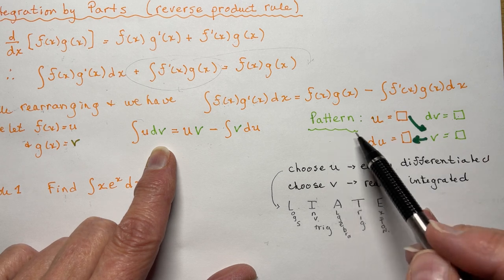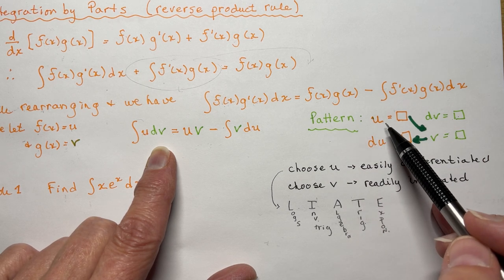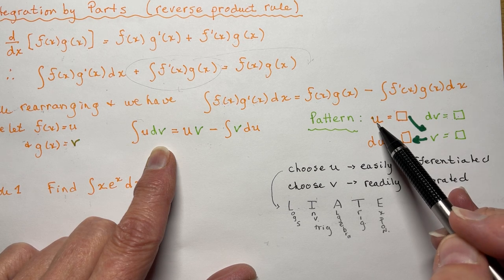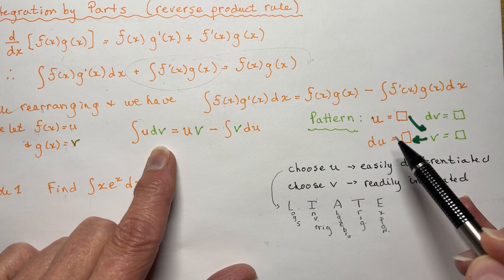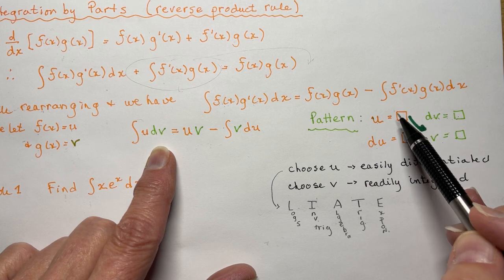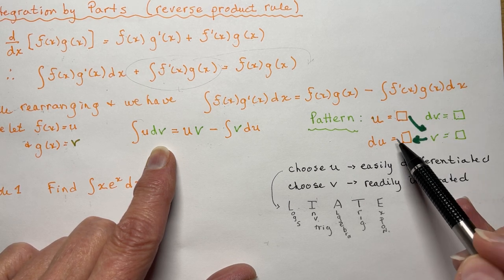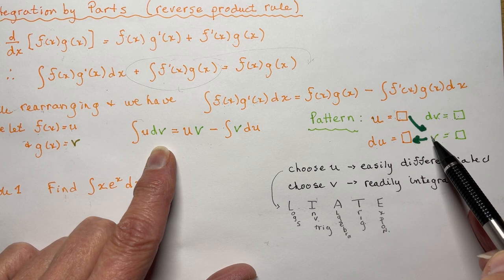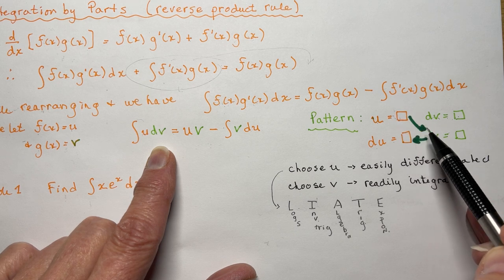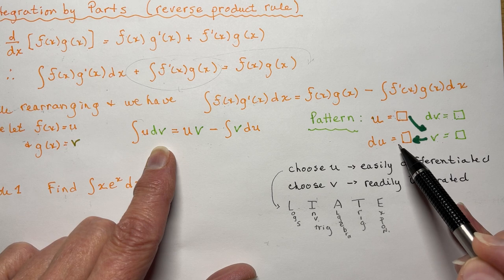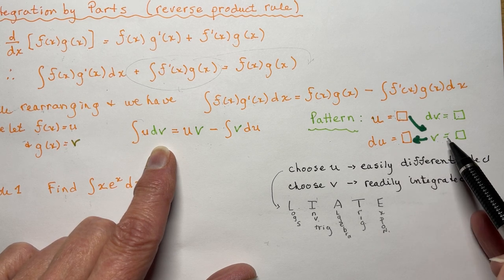So the pattern you're going to follow — and as we go through the examples it will become much clearer — if one is u and the other is dv, I take the derivative of one and I take the integral of the other. And these little arrows, if you write it out like this, it's going to be really simple: uv minus the integral of v·du. Very simple.